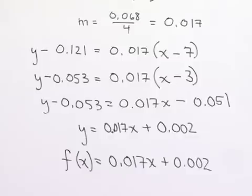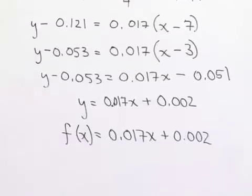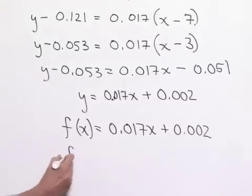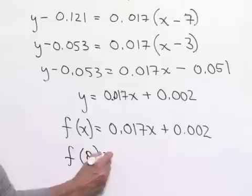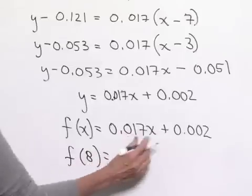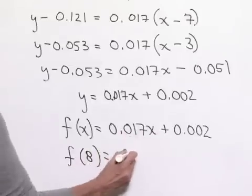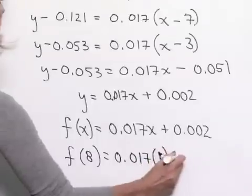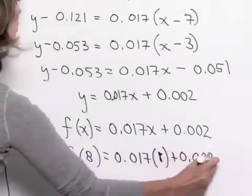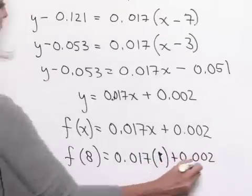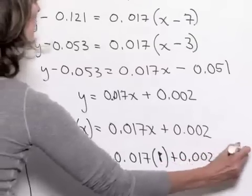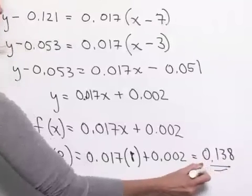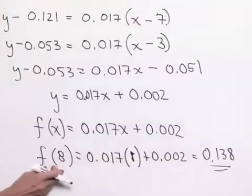Part C of the problem is asking us to determine what would happen if x, which stands for the number of beers, was equal to 8. So that means we can evaluate f(8) by substituting the value of 8 wherever we see an x. This will be 0.017 times 8 plus 0.002. Evaluating this gives us a value of 0.138, and this would then be the blood alcohol concentration after 8 beers.